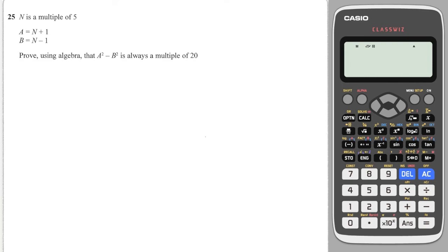Final question, it's question 25 so this must be tricky. It starts off by saying n is a multiple of 5. That's where the tricky part lies, because if n is a multiple of 5, I can rewrite that as 5 times some other number. So I'm going to write it as 5 times k. And now a will become 5k plus 1, and b will become 5k minus 1. And it says prove using algebra that a squared minus b squared is always a multiple of 20.